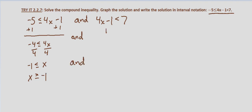Now solving the right hand side of the inequality, add 1 to both sides and we get 4x is less than 8. Divide both sides by 4 and we get x is less than 2.